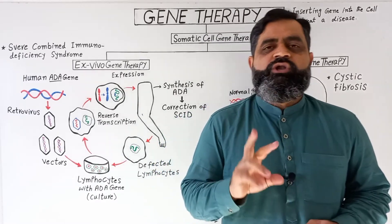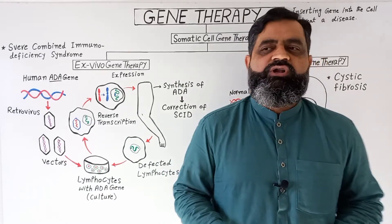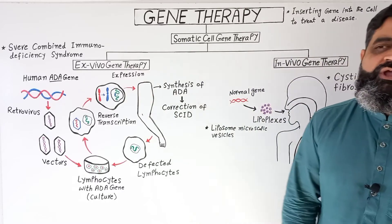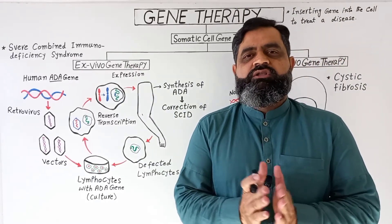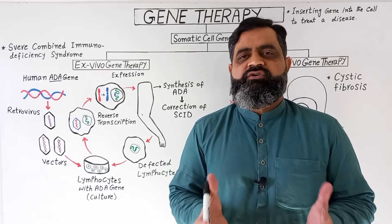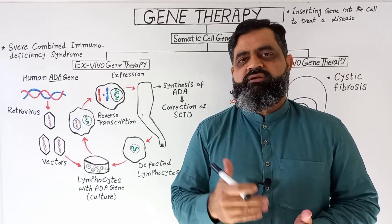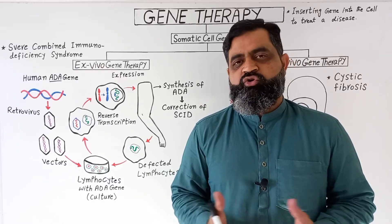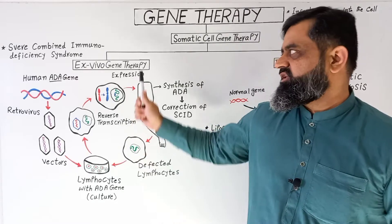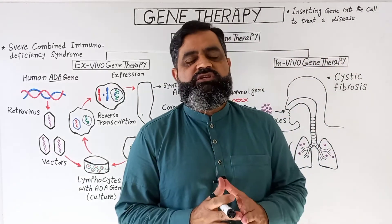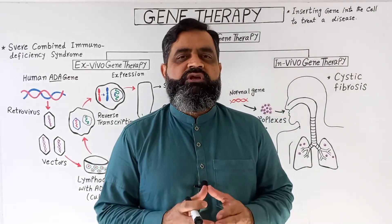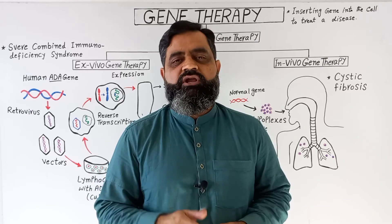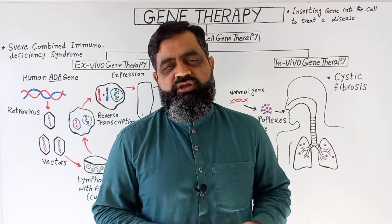There are two types of somatic cell gene therapy. One is known as ex vivo gene therapy and the other is in vivo gene therapy. In ex vivo gene therapy, we take out body cells from different organs and insert genetic material into them in a test tube or petri dish outside the body. In in vivo gene therapy, the genetic material is inserted into the working body cells inside the body.